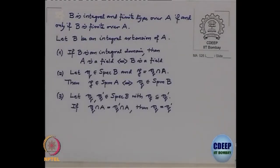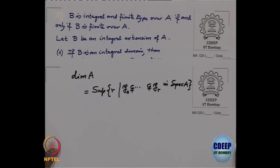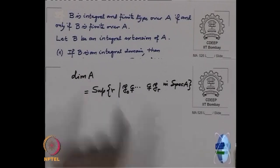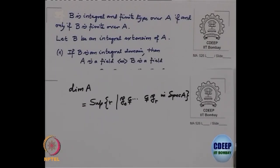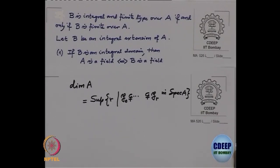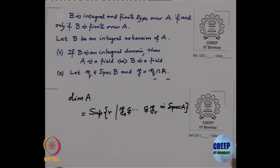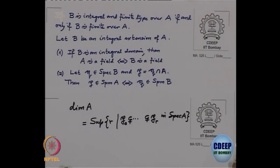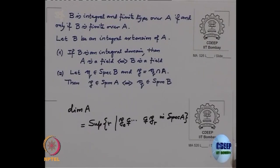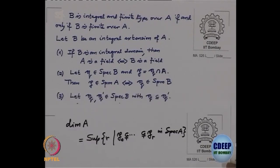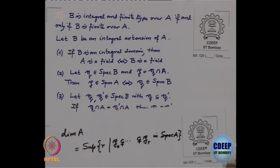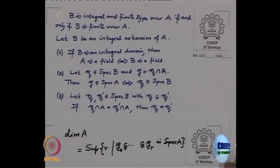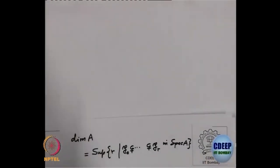Some important results we will keep using. First: if I have an integral extension where the upper ring is an integral domain, then it is a field if and only if the base ring is a field. Second: if Q is a prime ideal in B, its contraction to A is also prime; and if the upper ideal is maximal, the contraction is also maximal. Third: if two prime ideals in B have equal contractions to A, then they are equal themselves.